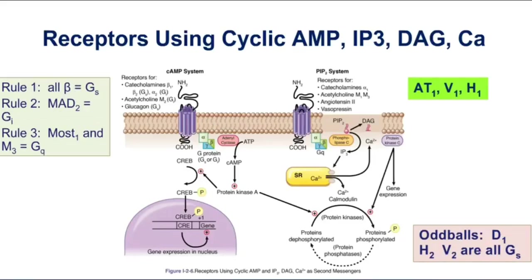When thinking about the different types of receptors coupled to G-proteins: rule number one, all betas are GS. Rule number two, if you take the three receptors M2, alpha-2, and D2, you can remember the MAD2s — they're all inhibitory G-protein coupled. Rule number three says most sub-1s and muscarinic M3s are GQ. Examples of the sub-1s: alpha-1, M1. The angiotensin-2 receptor is called AT1 — that's angiotensin-2 type 1 receptor — and that is GQ-coupled. The vasopressin V1 receptor is GQ. And the histamine H1 receptor is also GQ.